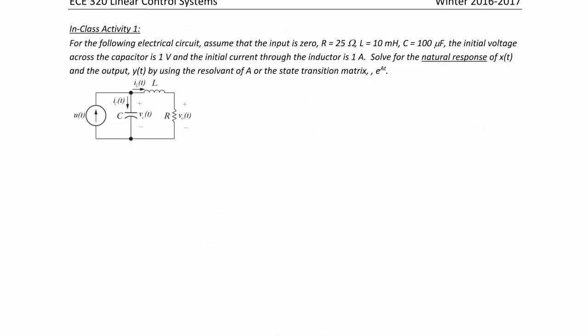In-class activity 1: For the following electric circuit, assume the input is 0, R = 25 Ω, L = 10 mH, C = 100 μF, the initial voltage across the capacitor is 1 volt, and the initial current through the inductor is 1 amp. Solve for the natural response x(t) and output y(t) using the resolvent of A or the state transition matrix e^(At).